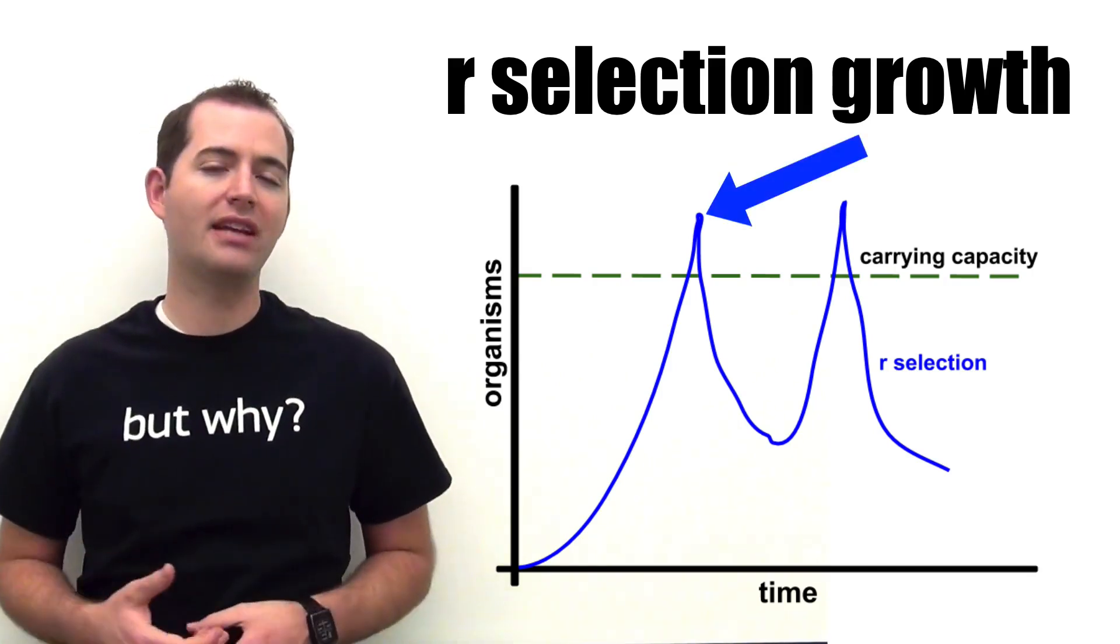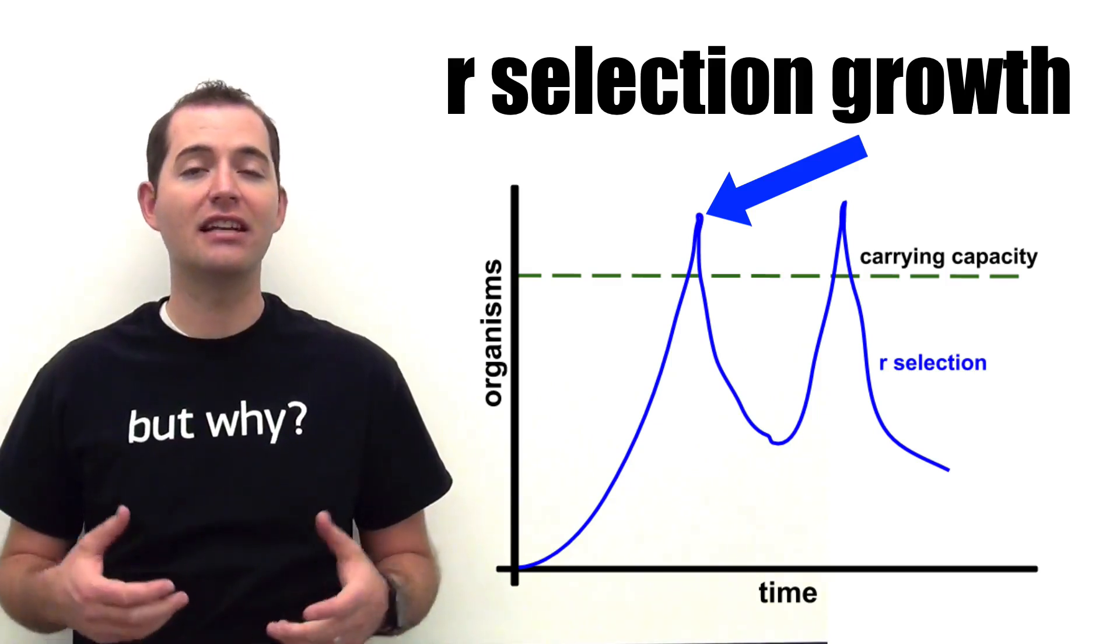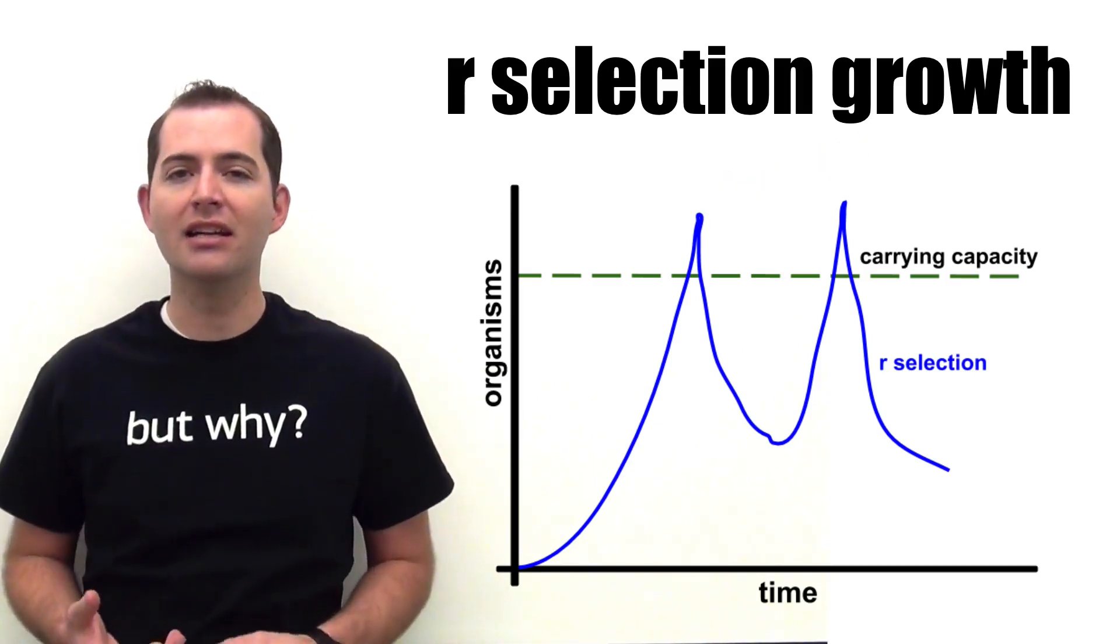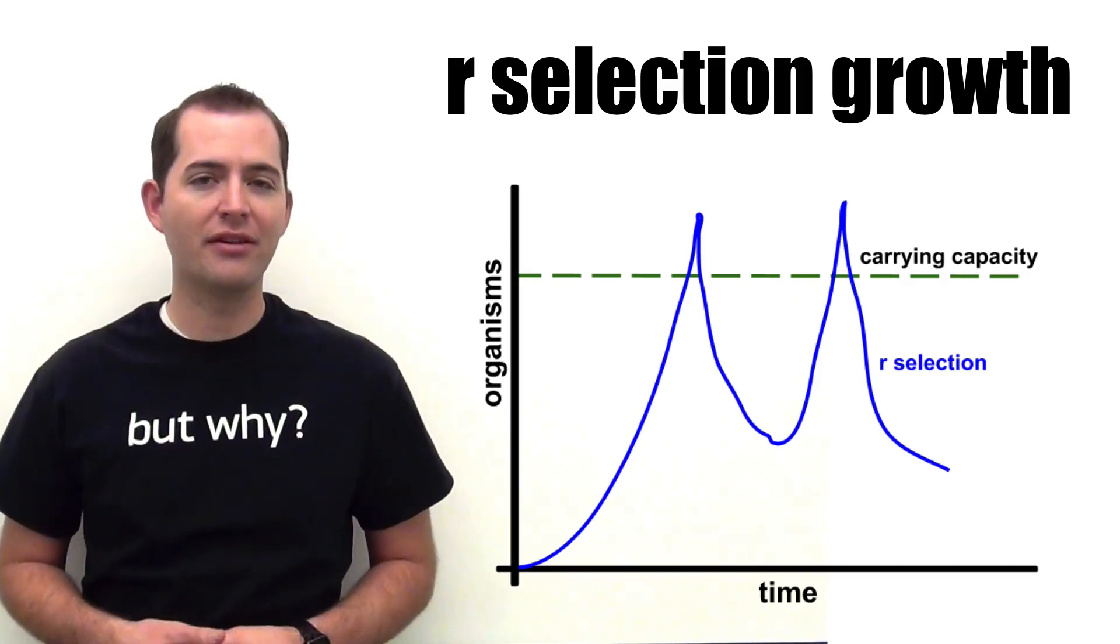This growth above the carrying capacity causes an exhaustion of available resources. This makes it so that mortality becomes the main regulatory factor.